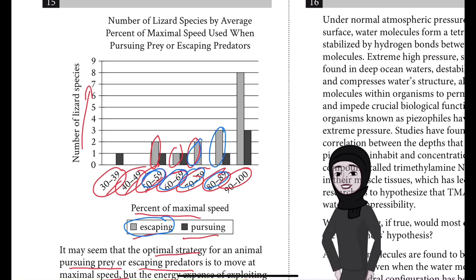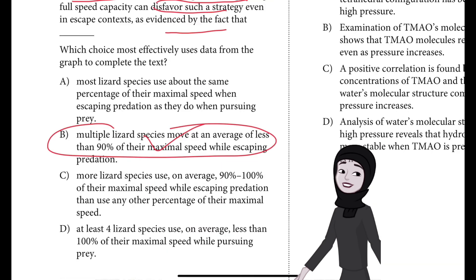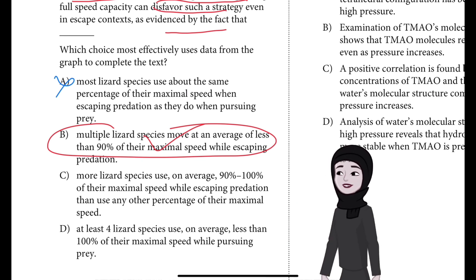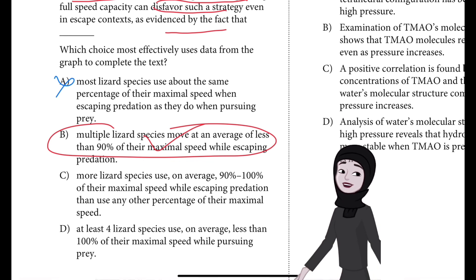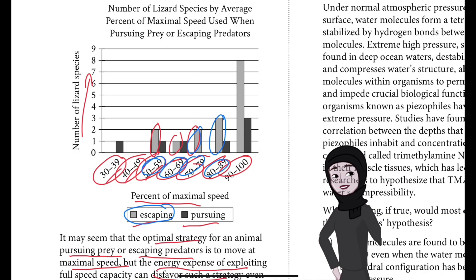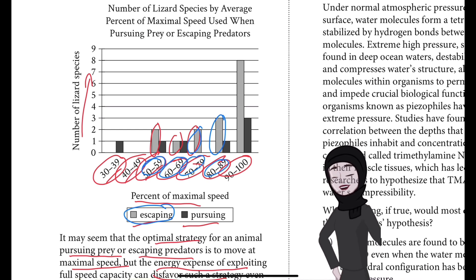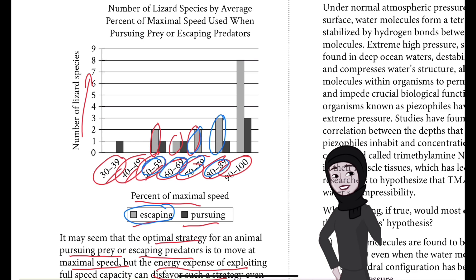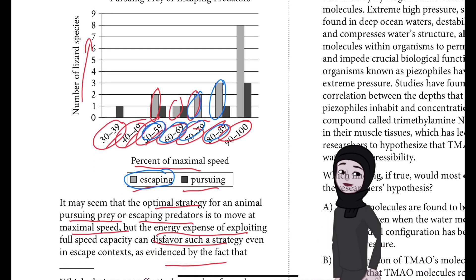Why is A incorrect? A is incorrect because the data in the graph is not organized in such a way that a comparison of the percentage of maximal speed used when escaping predation with the percentage used when pursuing prey is possible at the level of individual species. We are just given random numbers of lizard species with percentages — individual species cannot be compared.